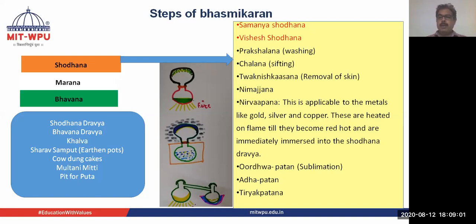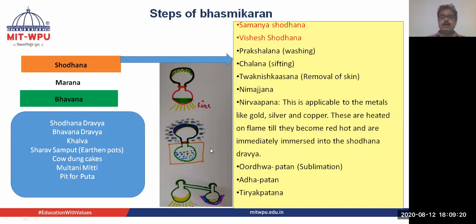Niropana is applicable to metals like gold, silver, and copper. These are heated on flame until they become red hot and are immediately immersed into a Shodhana dravya. Then Urdhva Patan is sublimation, and this diagram shows the Urdhva Patan process.